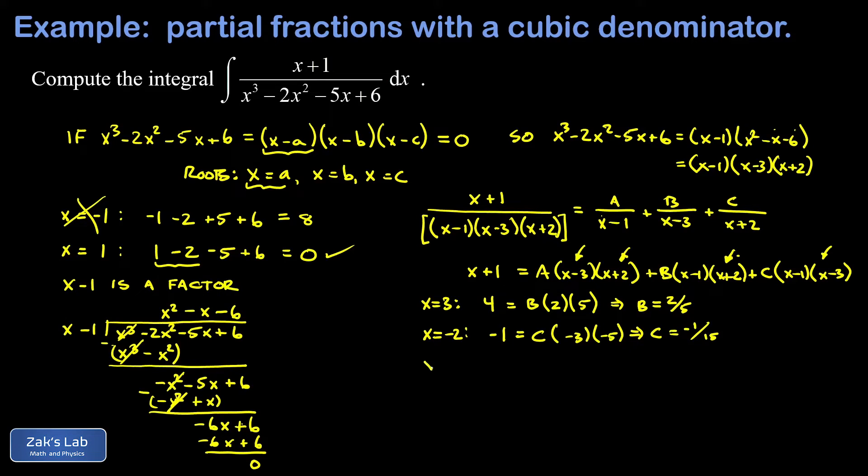And finally, we sub in x equals one on the left hand side. That gives us a two. And our b and c containing terms both vanish. a is the only survivor here. Subbing in x equals one, I end up with a times negative two times a three. That's a negative six a on the right hand side. When I divide by that, a is negative two over six or negative one over three.